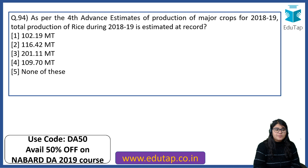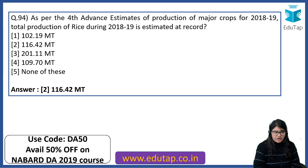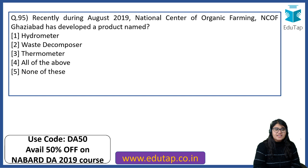As per the fourth advanced estimates for 2018-19, total production of rice is estimated at 116.42 million tons. During August 2019, the National Centre of Organic Farming Ghaziabad developed a product — what is it named? We just saw this. The answer is Waste Decomposer.